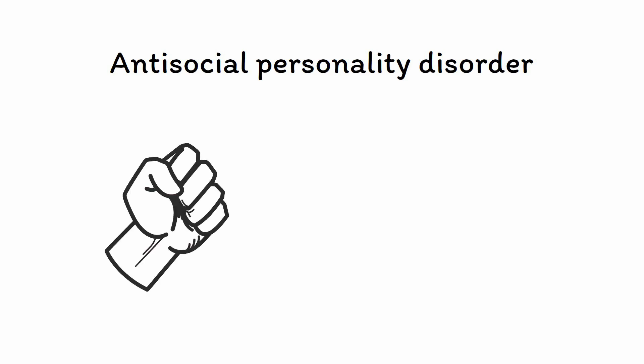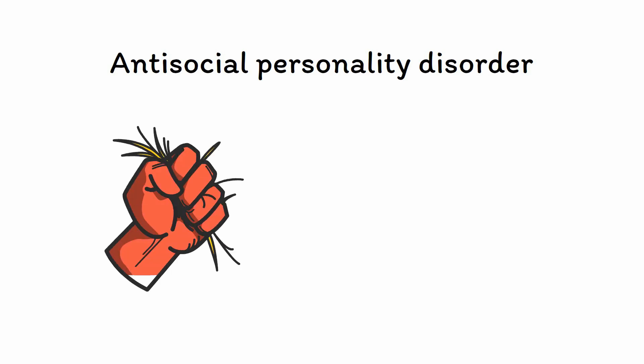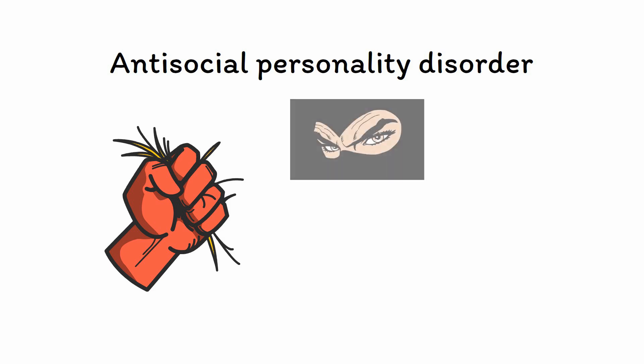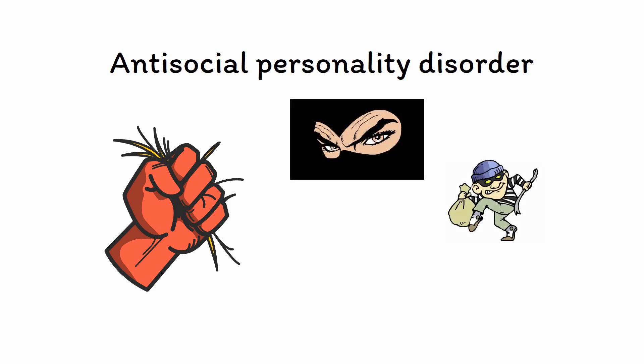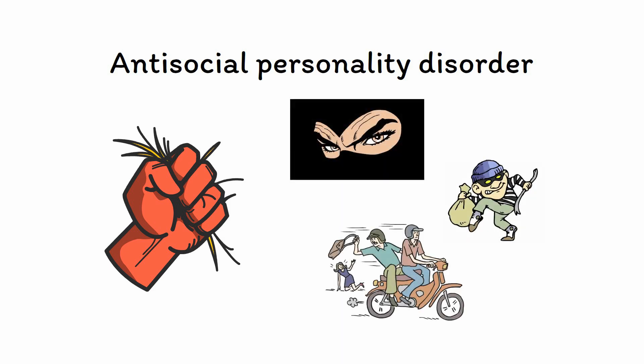Antisocial Personality Disorder, or ASPD, is a condition characterized by a persistent pattern of behavior that infringes on the rights and safety of others, including purposeful deception, theft, fraud, aggression, and even violence. The idea of a psychiatric diagnosis based around a pattern of bad behavior seems simple enough. However, when you scratch below the surface, ASPD is a surprisingly complicated disorder to understand.